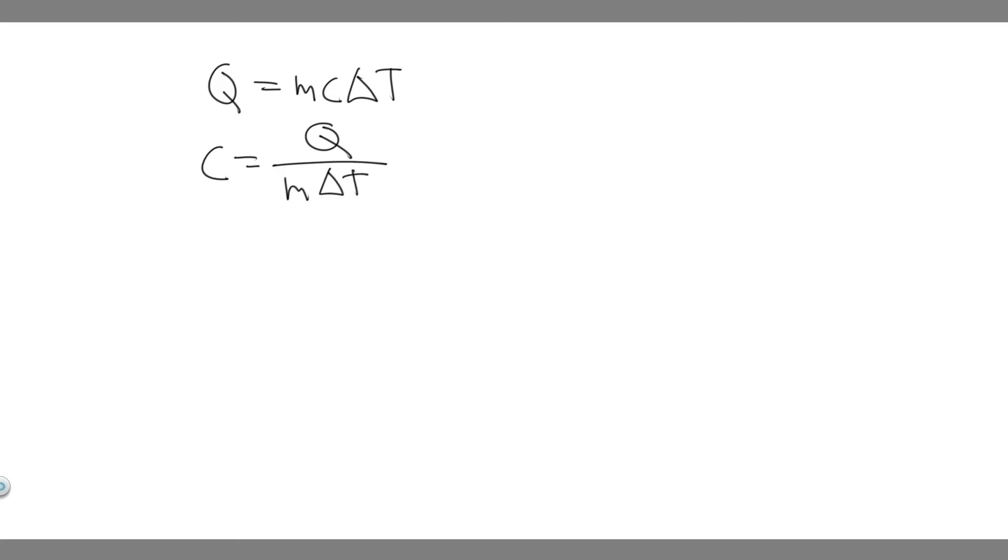What we're going to do is solve this formula for C. Let's write down our given now. They basically give us all the information in order to solve this. They tell us the mass, which is the M value. Our mass is going to be 5.1 kilograms.